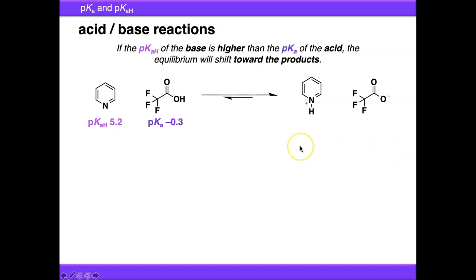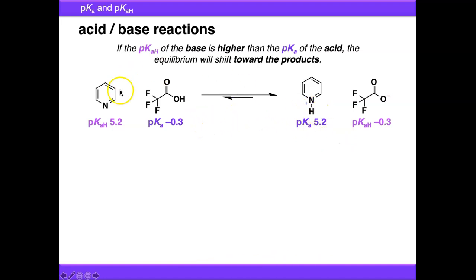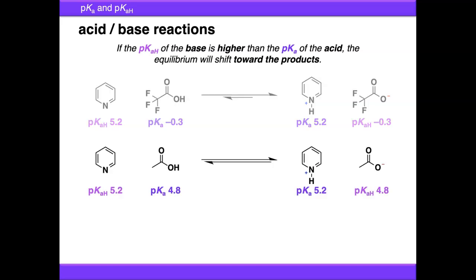This works the other way around too. The pKa of pyridinium is 5.2, and the pKaH of trifluoroacetate is −0.3. Since the pKaH of trifluoroacetate is not higher than the pKa of pyridinium, the equilibrium is weighted towards starting materials. If we change to a weaker acid — regular acetic acid — the pKa increases to 4.8. The pKaH of our base is now only slightly higher than the pKa of the acid, so the equilibrium is reasonably even, probably slightly weighted towards the products.